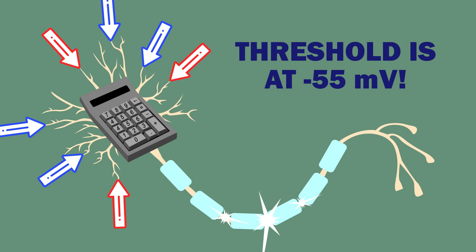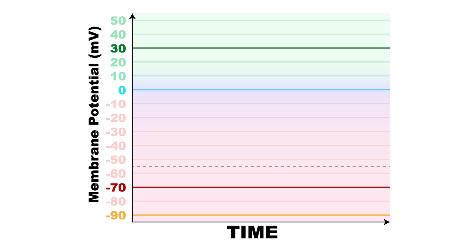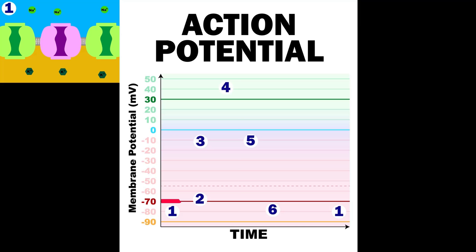EPSPs make it more likely that an action potential will occur, while IPSPs make it less likely. Unlike graded potentials, which are changes in potential varying in size, action potentials are all or nothing. More intense stimuli simply mean a higher frequency of firing. So let's go through the steps of an action potential.